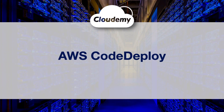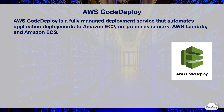Hey guys, welcome back, I'm Jay. In this episode, we're going to look at AWS CodeDeploy. AWS CodeDeploy is a fully managed deployment service that automates application deployments to a variety of compute services, such as Amazon EC2, ECS, AWS Lambda, and on-premises servers. CodeDeploy makes it easy to rapidly release new features, helps you avoid downtime during the application deployment, and handles the complexity of updating applications.